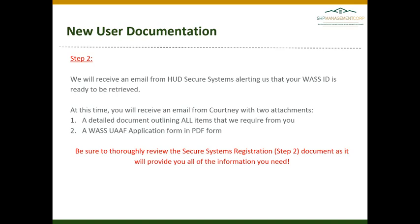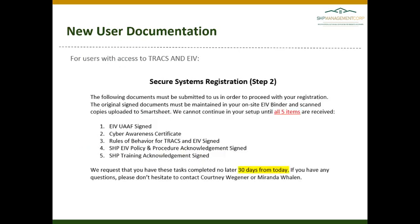Once you have registered for your ID and we receive the alert from HUD that you have been approved for an ID, Courtney will email you with two attachments. The first will be a detailed document outlining all items that we require from you. The second item will be a WASP UAAF application form in PDF format. Please be sure to thoroughly review the Secure Systems Registration Step 2 document, as it will provide you all the information you need.